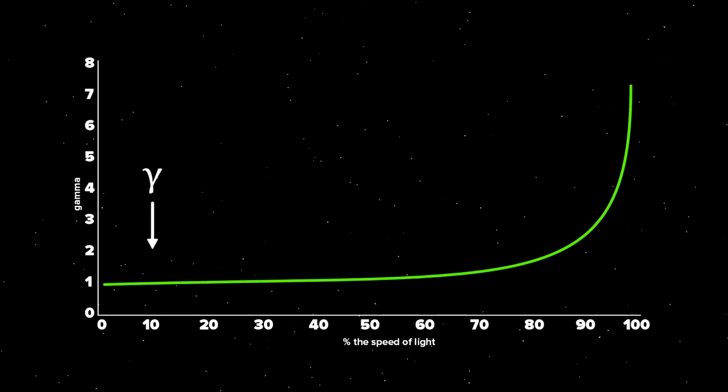And as an object's velocity increases towards c, gamma gets higher and higher and the energy of the object increases. Note that the mass doesn't increase, but the energy does.